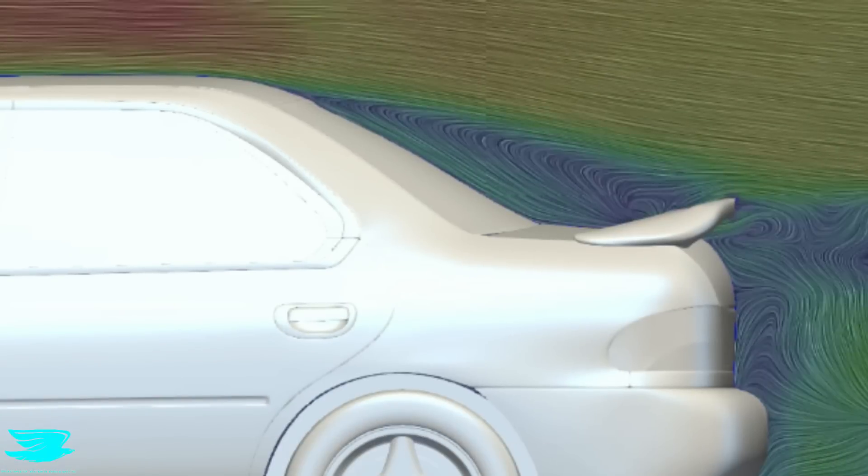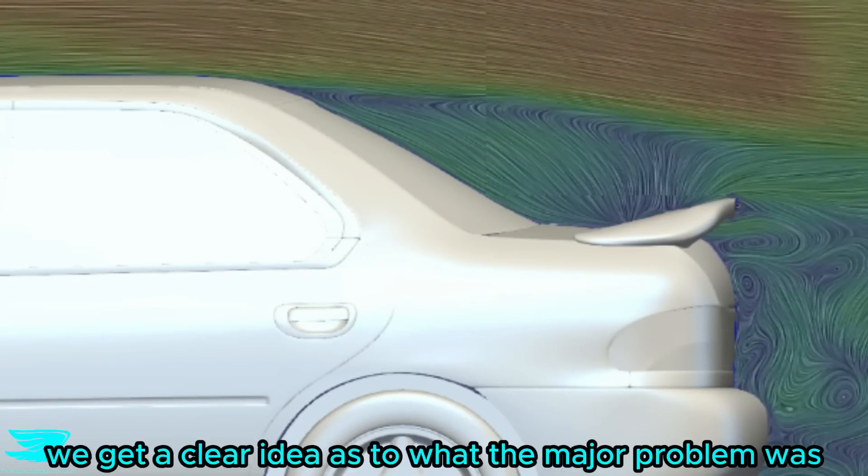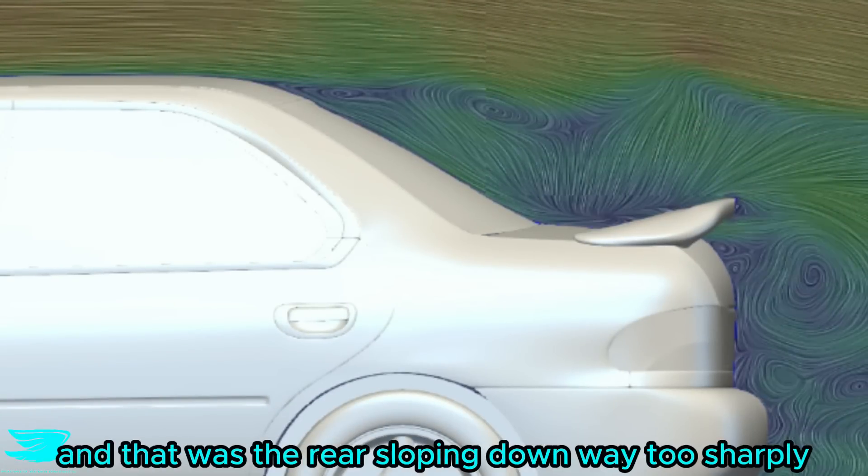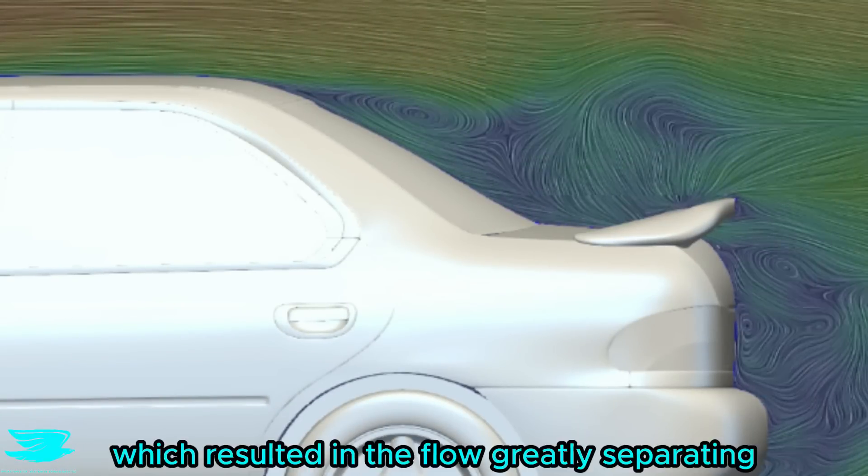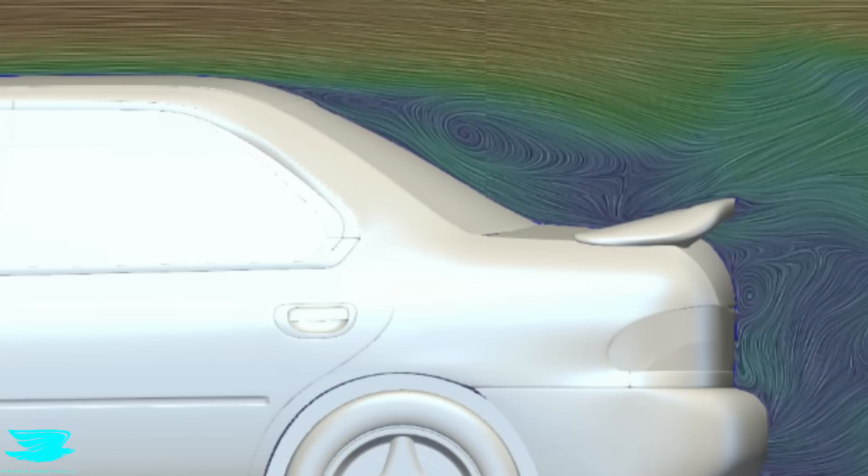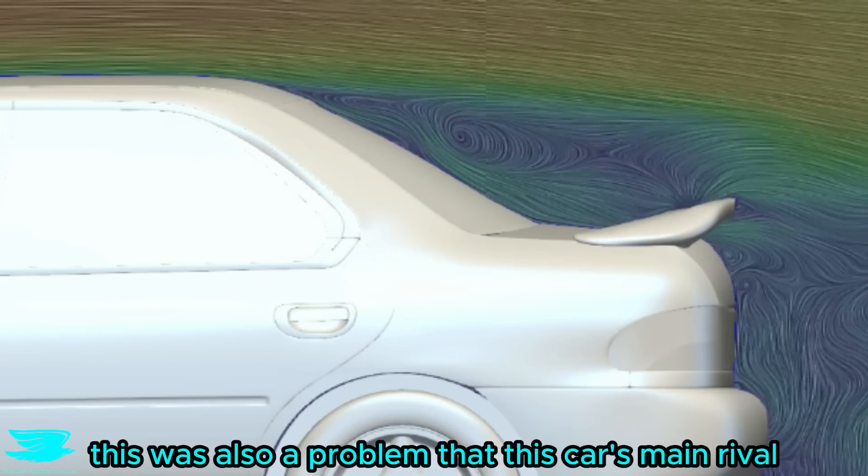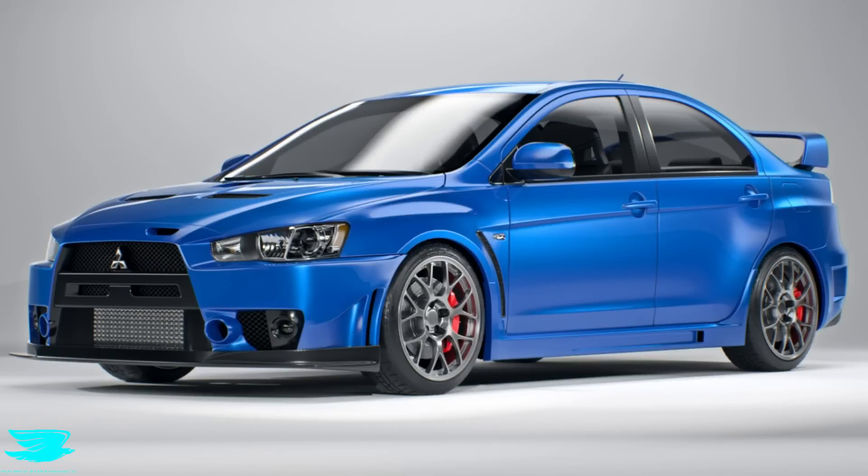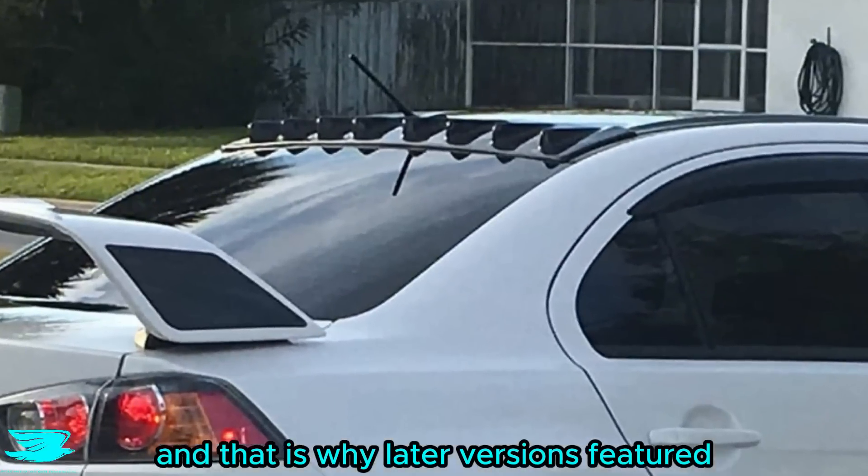But if we look at the rear window, we get a clear idea as to what the major problem was, and that was the rear sloping down way too sharply, which resulted in the flow greatly separating. This was also a problem that this car's main rival, the Mitsubishi Evo, had, and that is why later versions featured vortex generators.